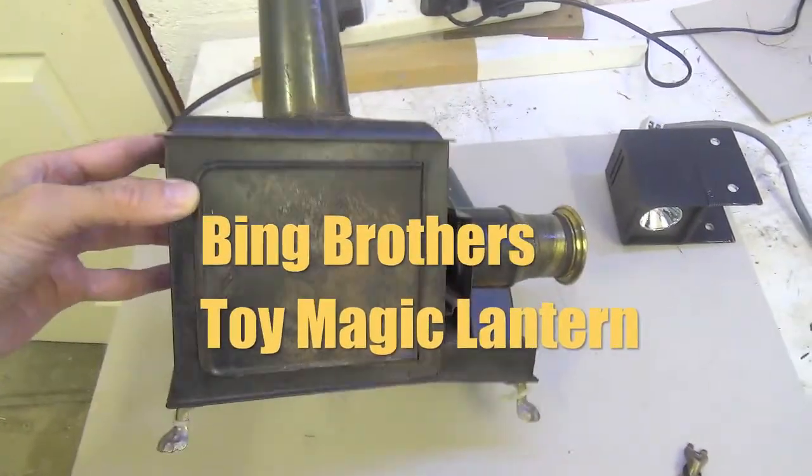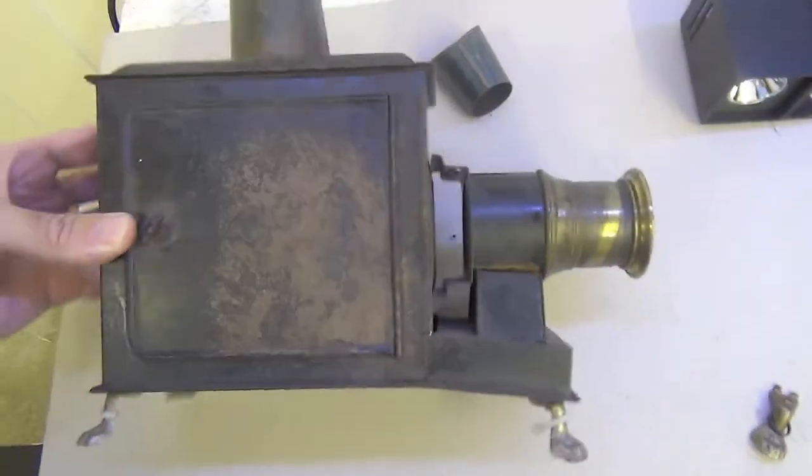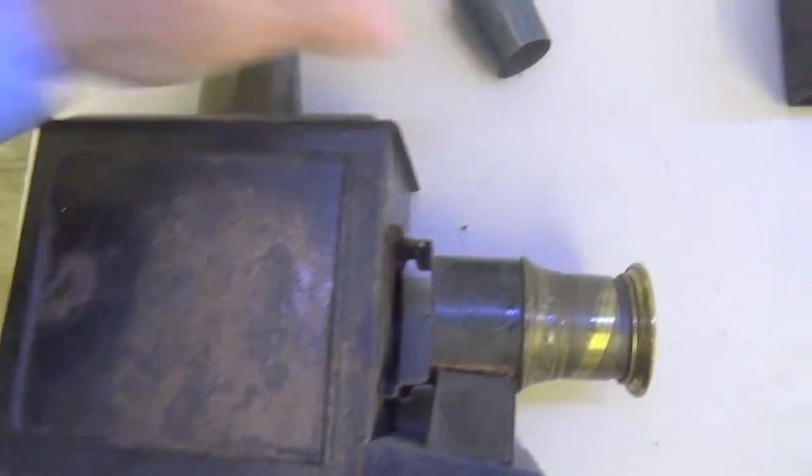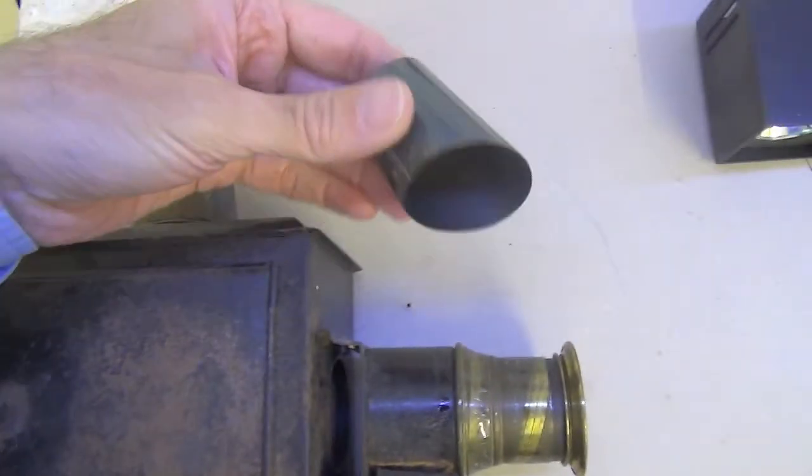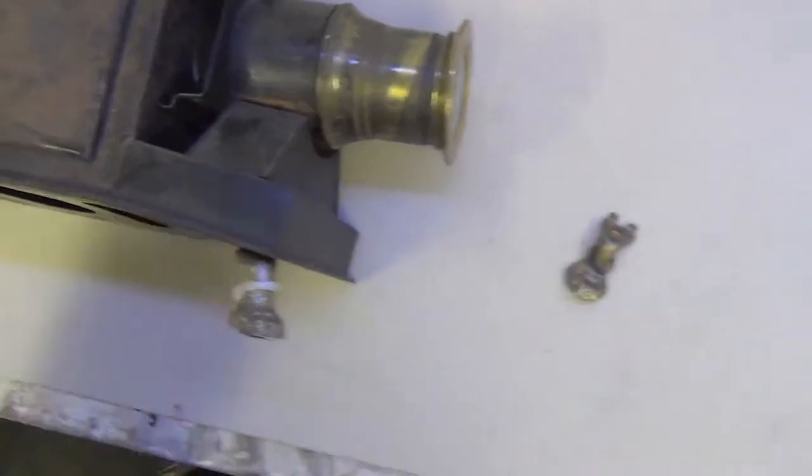Here's a little Bing toy lantern from about 1900, slightly the worse for wear at the moment. The top of the chimney is damaged and one of the feet was off.